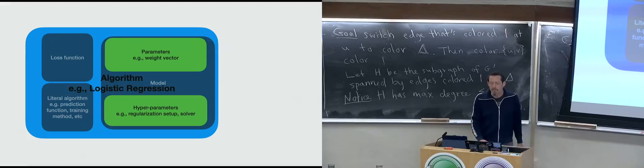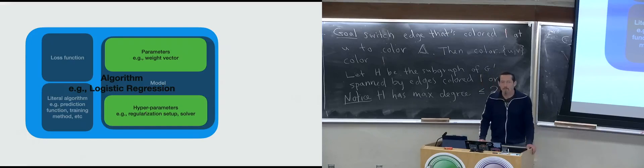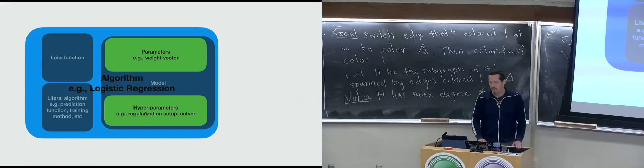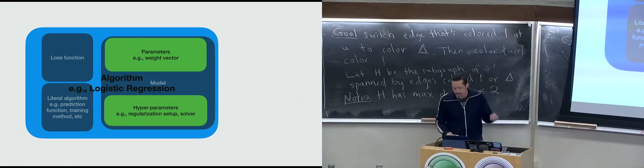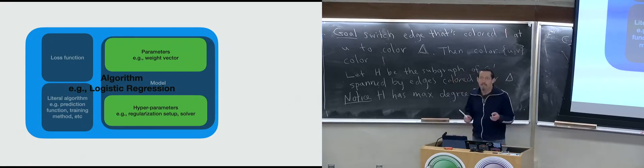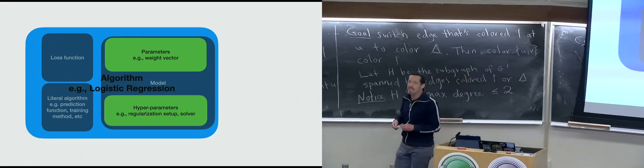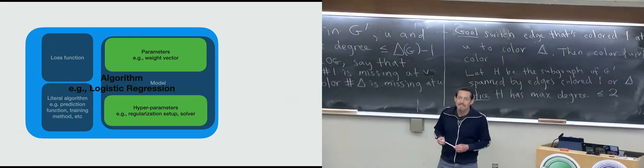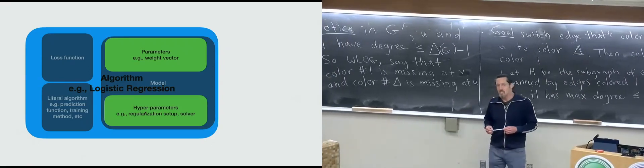When we talk about model selection, what we're usually talking about is finding the right hyperparameters. For the support vector machine, are you trying to minimize the misclassification error or the hinge error? The hinge error.